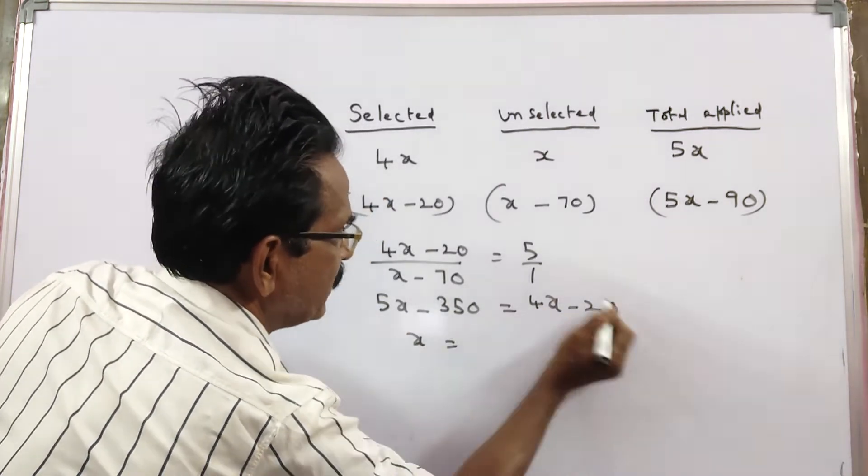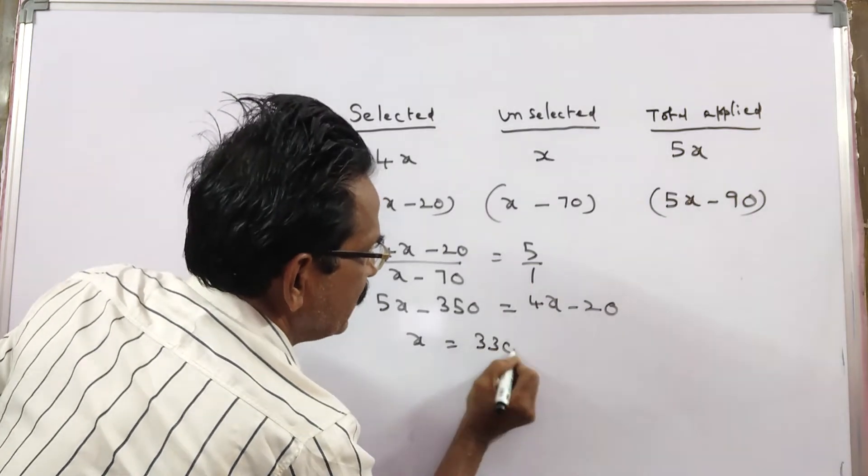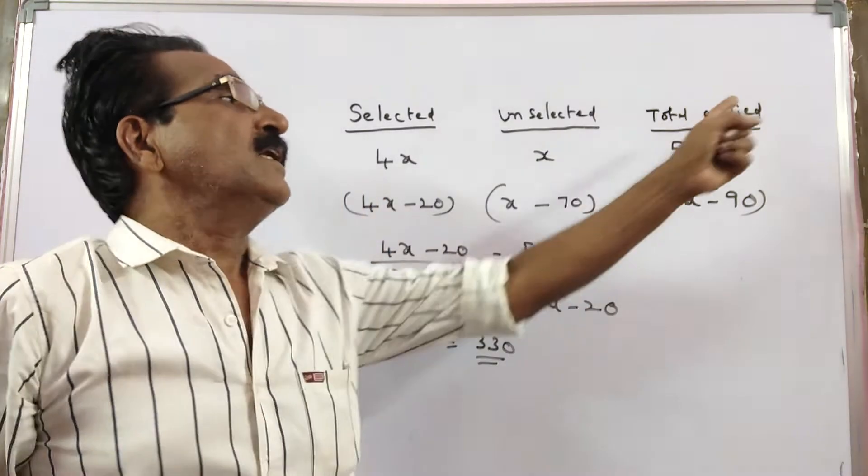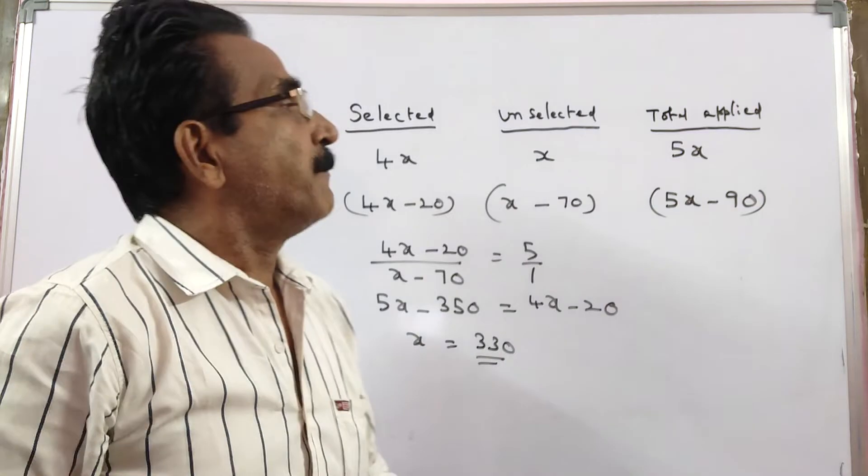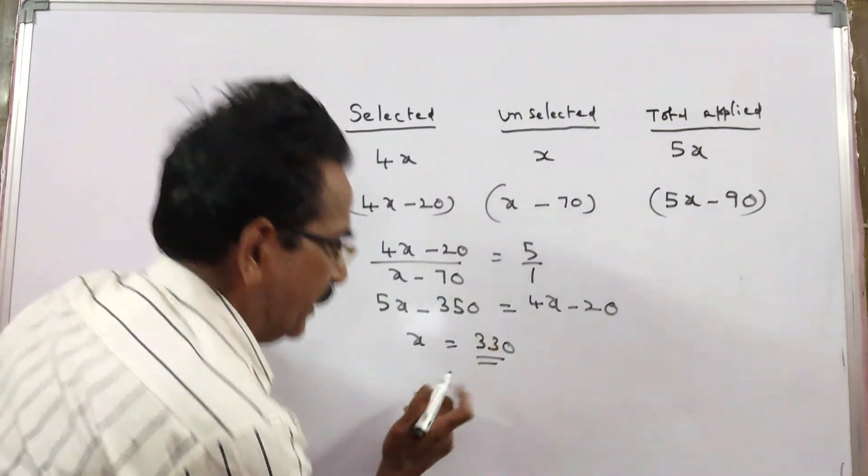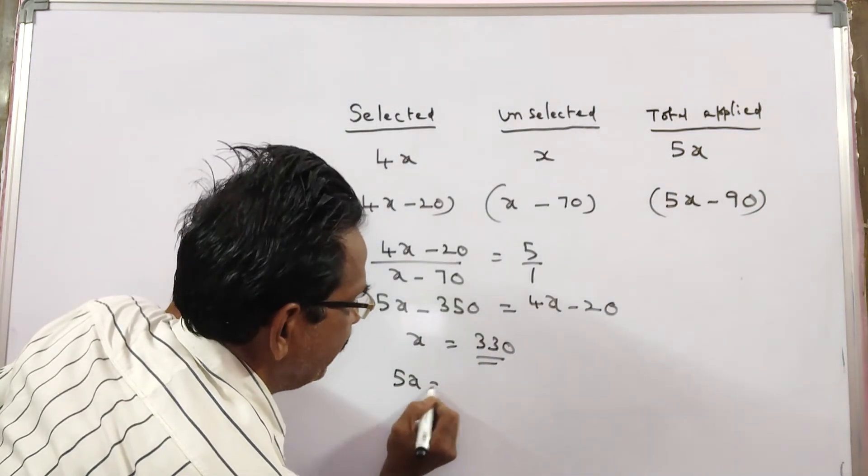x is equal to 330. So now the total applied is 5x, 5 into 330.